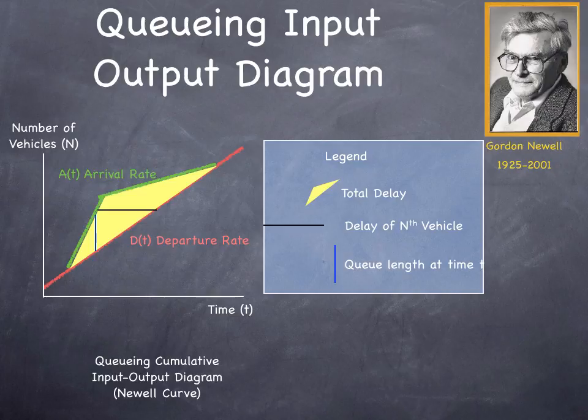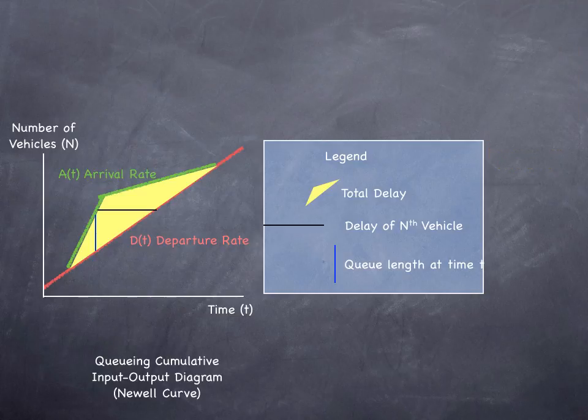What you're looking at is time on the x-axis and the number of vehicles on the y-axis. Now we have a departure rate in red, how quickly vehicles leave the front of the queue, or how quickly people get their parking space at the Washington Avenue ramp, or how quickly somebody checks out of the checkout line, or how quickly someone pays the cashier at the barbershop.